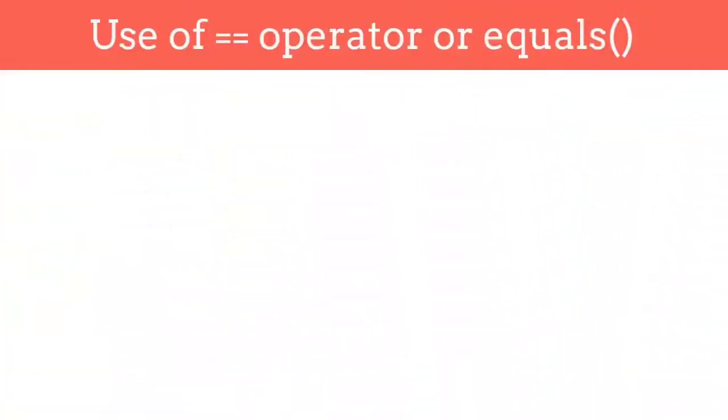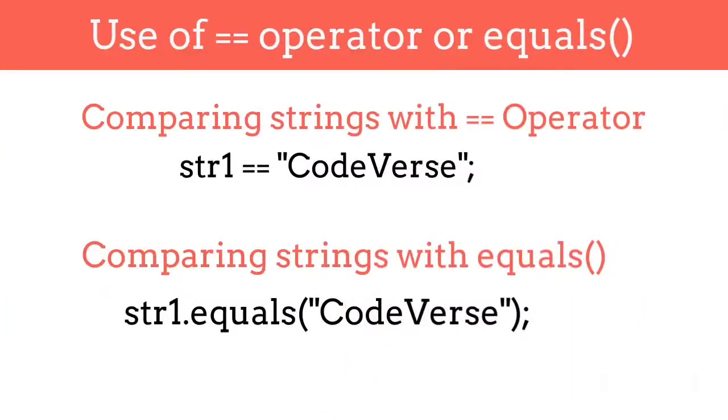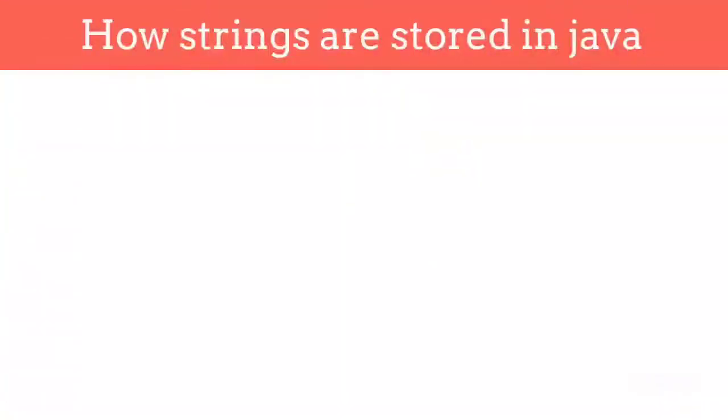Double equal to operator and equals method are used to check if strings are equal or not, and some developers use them alternatively. But what is the exact difference between them? The answer to this question lies in how strings are stored in the backend of Java.